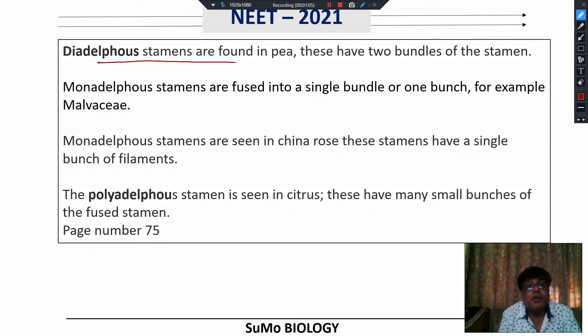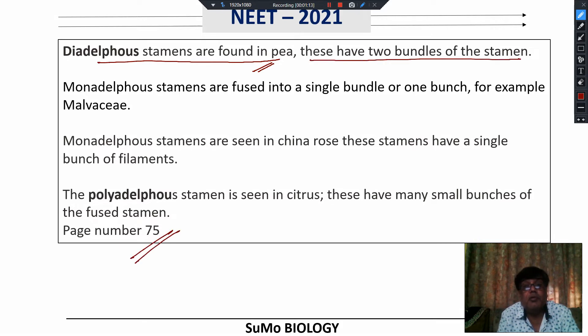Diadelphous stamens are found in P. It is clearly mentioned in your NCERT Class 11 Biology book, page number 75. These have two bundles of stamens.